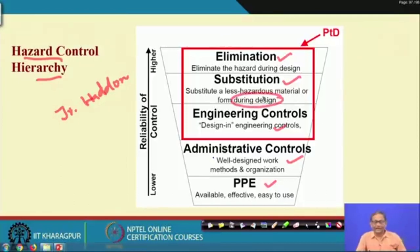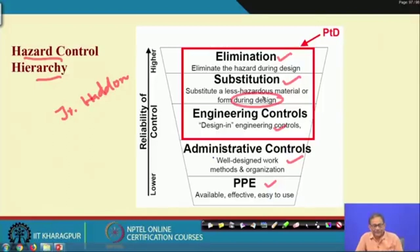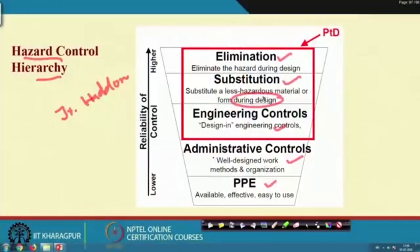If you cannot eliminate, substitute a less hazardous material or form during design. For example, if working at height cannot be totally eliminated, at least eliminate the need for the maintenance person to carry heavy materials at height. Substitution example: if a pneumatic control machine uses toxic gas but ordinary gas would serve the same purpose, substitute the toxic gas with the less hazardous one.